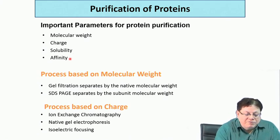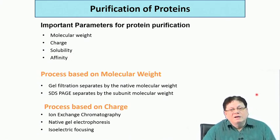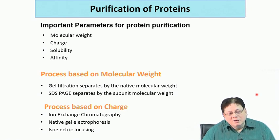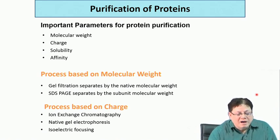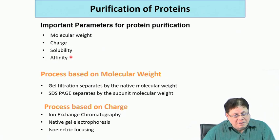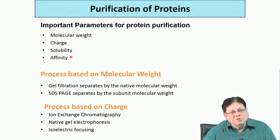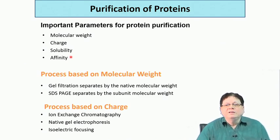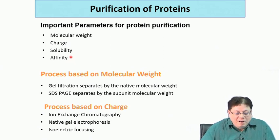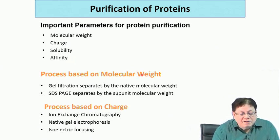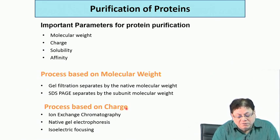The fourth method is called affinity chromatography — you attach a molecule which has high affinity towards a particular protein, and as you elute the protein solution, the protein with higher affinity sticks to the column while others pass through. You then apply a buffer solution to detach the bound protein, purifying it. We are going to discuss two methods: one based on molecular weight and another based on charge.